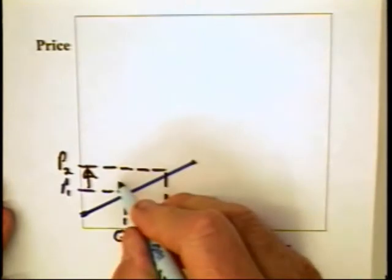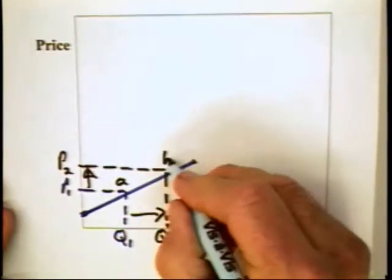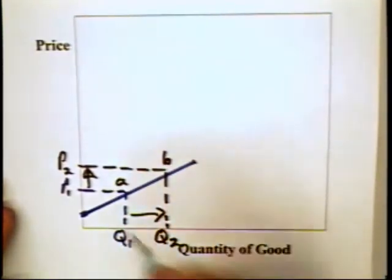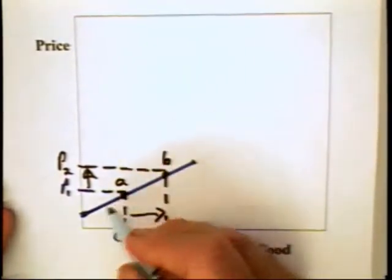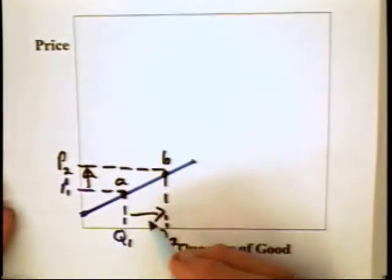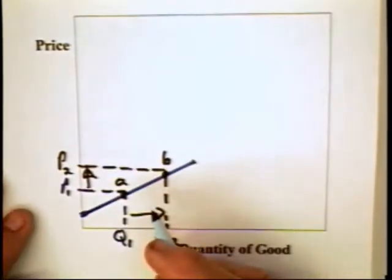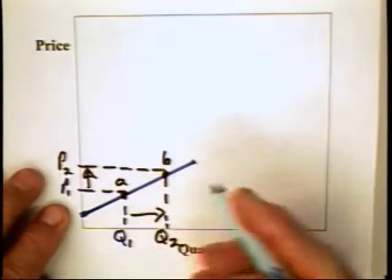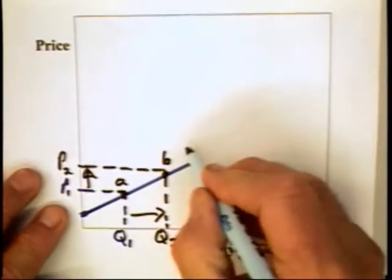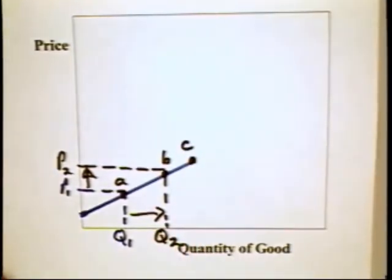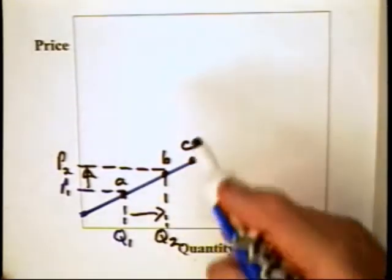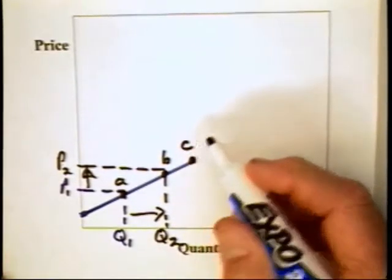If producers have a choice between combination A and combination B, they would eagerly choose B over A because they can sell a larger quantity for a higher price. We might imagine they would choose combination C over B, but we have to worry about where this demand curve ends.